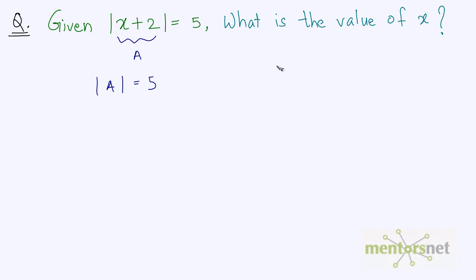Now we know that if we take the mod of 5 we get 5, and if we take mod of minus 5 we also get the answer as 5. So the values that A can take is 5 or minus 5, but we know that x plus 2 is equal to A.